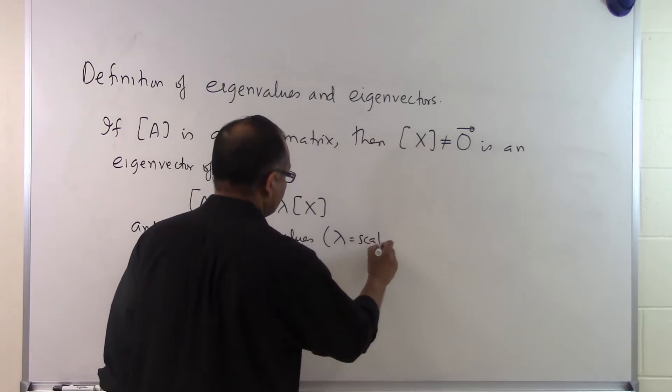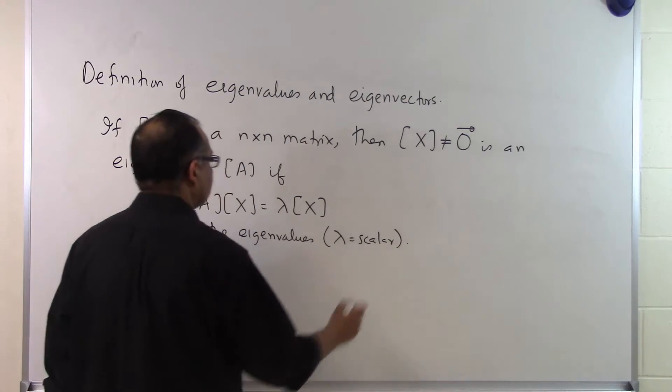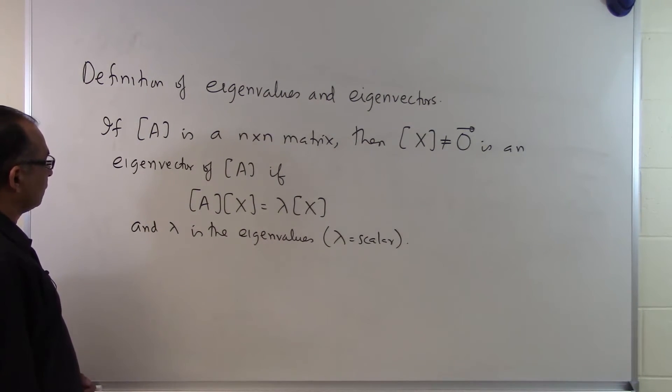And of course lambda is a scalar so it's just a number. So that's how we define eigenvalues and eigenvectors.